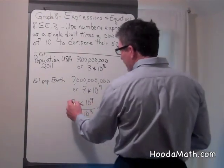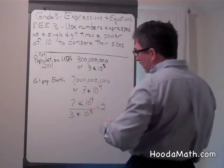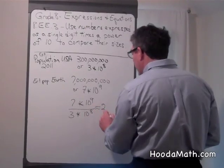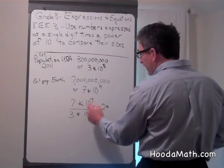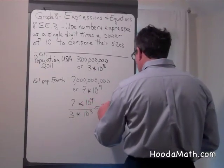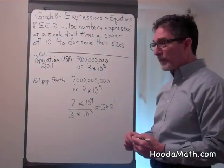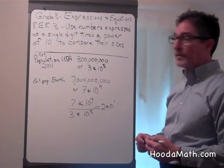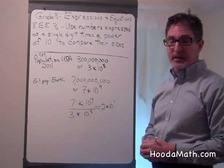And we would find 7 divided by 3 is approximately 2. It's 2 and 1 third, but we'll say it's approximately 2. When we divide, we subtract the exponents, 10 to the 1st power. So we could say that the Earth's population is about 2 times 10 or 20 times larger than the population of the United States.